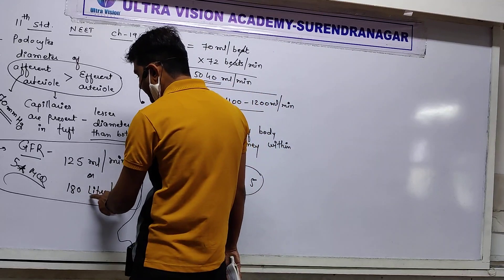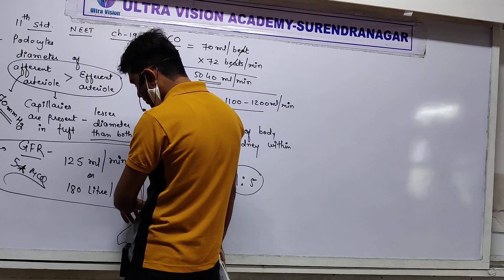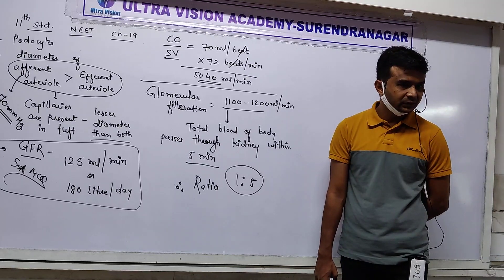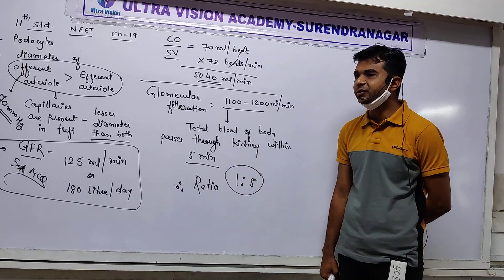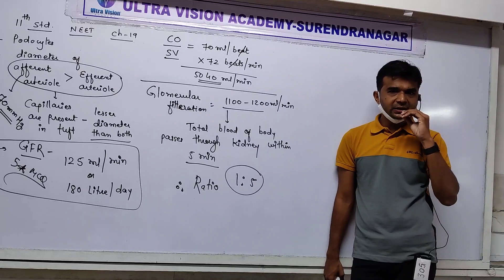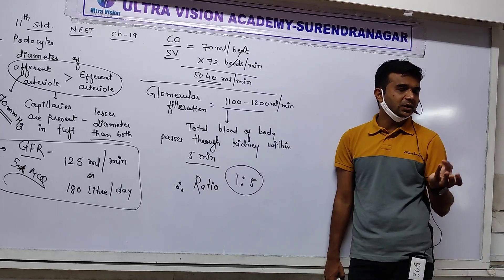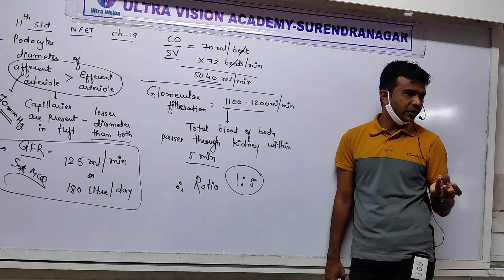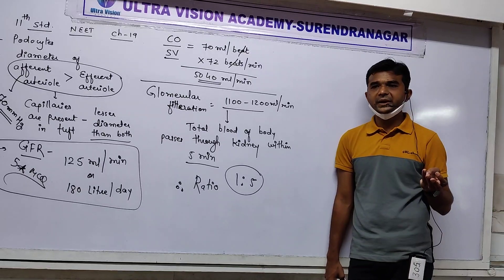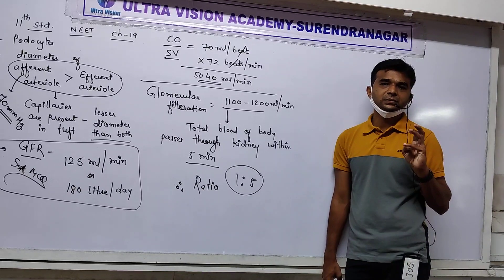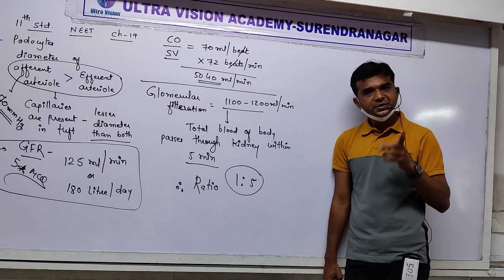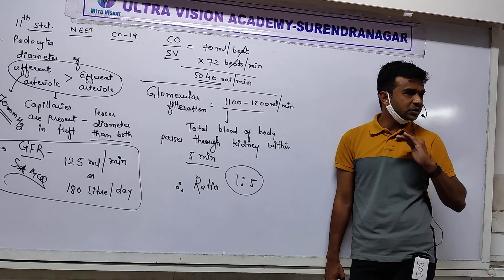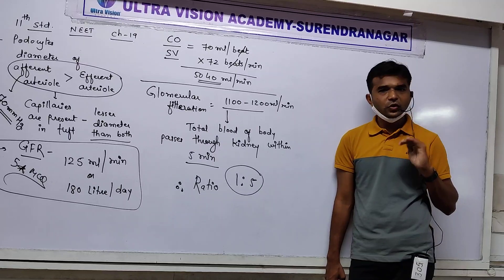This is very important for counter-current maintenance. 180 liters of filtrate is formed per day, but 99% of that filtrate is reabsorbed. That is why we excrete only 1 to 2 liters of urine per day. The amount of urine produced is regulated according to body physiological activity and water intake.